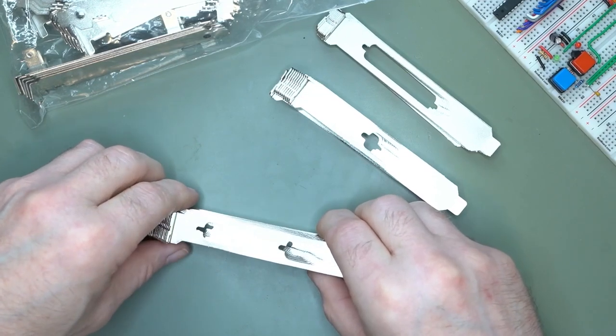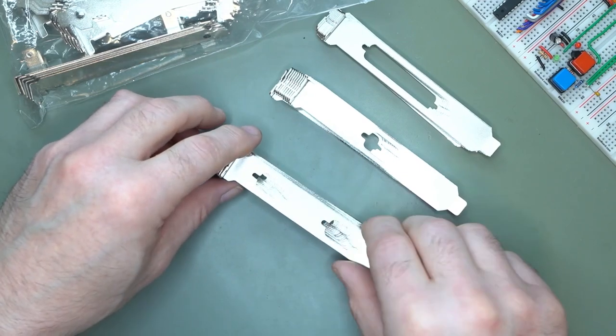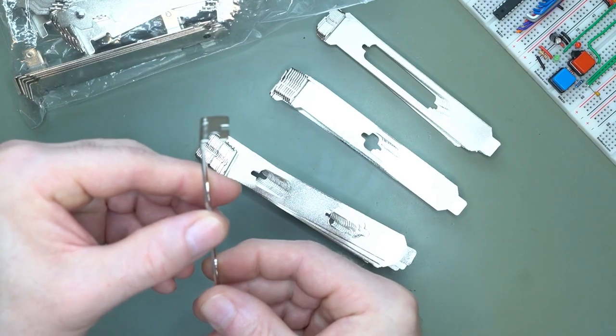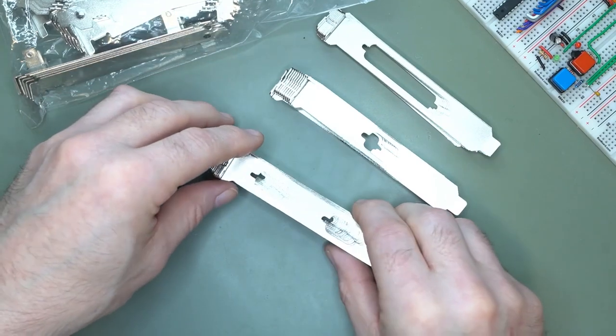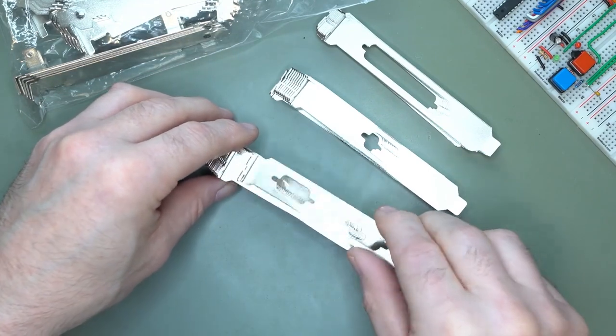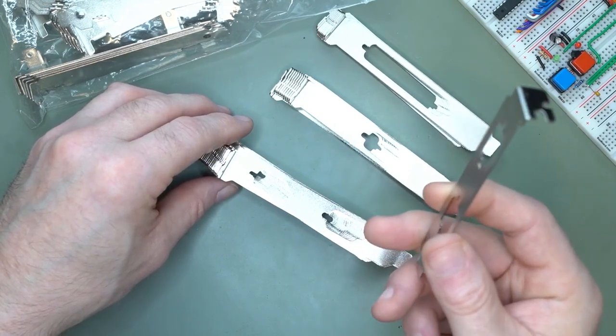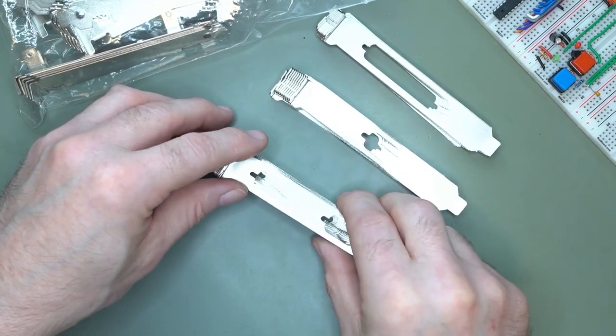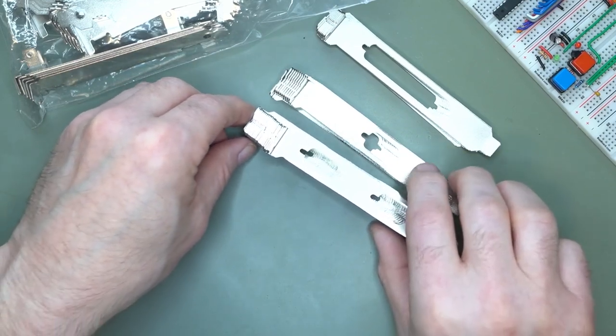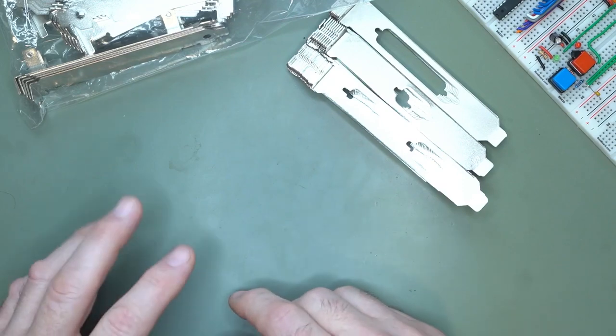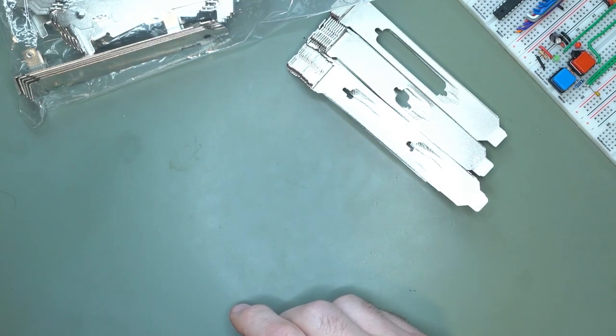If you have any idea where I can find the correct dimensions for these, because normally there's a specific height your bracket has to be, I found the dimensions of the board but not where the bracket has to be in relation to the board. If you do have any information regarding that on the web, please post a link in the comments down below. That would be really appreciated.